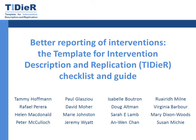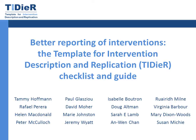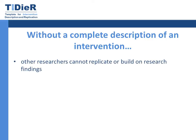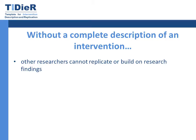Publications about interventions make up a large proportion of the research that is published, yet the quality of descriptions of interventions in publications is remarkably poor. Without a complete published description of an intervention, other researchers can't replicate or build on research findings, and for effective interventions, clinicians, patients and other decision makers are left unclear about how to reliably implement the intervention.